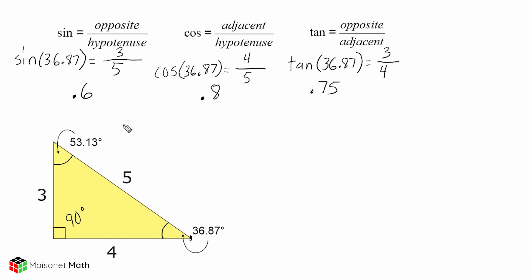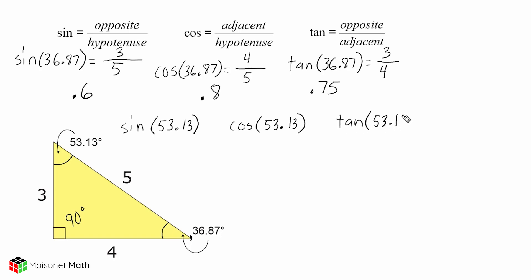Let's go ahead and determine the sine of our 53.13 degree angle, the cosine of our 53.13 degree angle, and the tangent of our 53.13 degree angle. The sine is just the opposite side over the length of the hypotenuse. The opposite side relative to this angle would be a length of 4, and our hypotenuse is 5, so 4 fifths equals 0.8. The cosine of 53.13 is our adjacent length over the hypotenuse — the adjacent side is 3 and our hypotenuse is 5, so 3 over 5 equals 0.6.